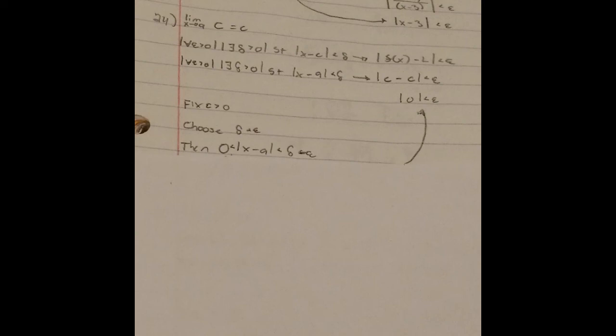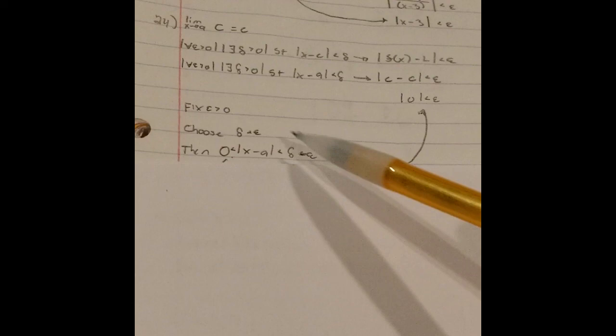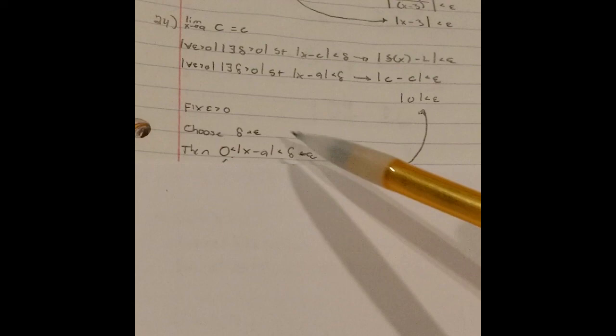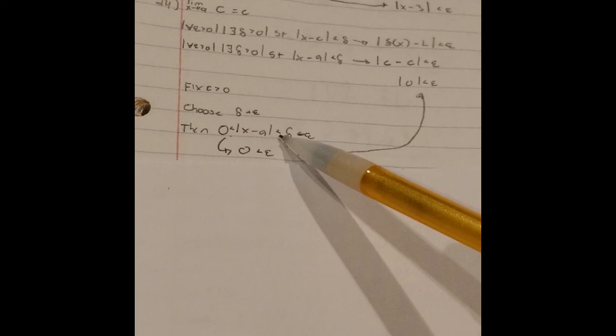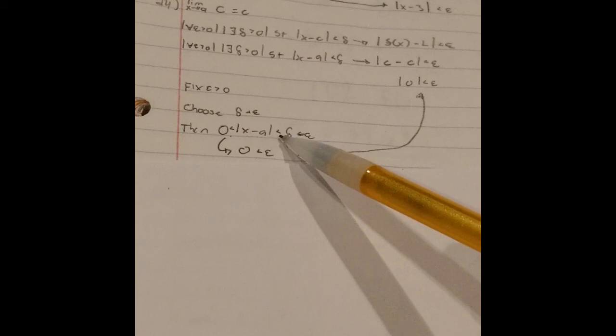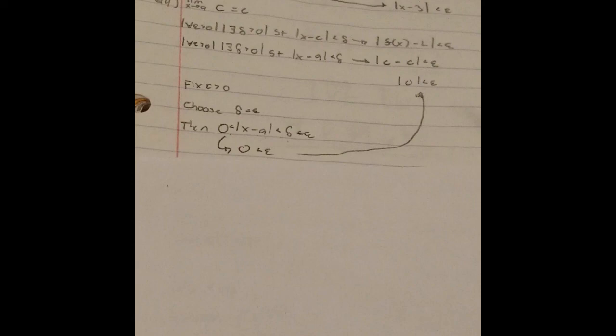If I fix epsilon greater than 0, that's always true since epsilon must be positive. It doesn't matter what I choose delta to be. We choose delta less than epsilon. Then 0 is less than |x − a| — which must be positive since x can't equal a when delta is positive — which is less than delta, which is less than epsilon. So the proof works. It looks complicated, but once you do the algebra and a little bit of logic, it's not too bad.